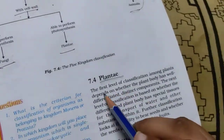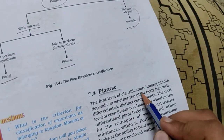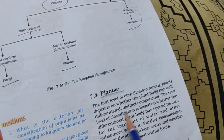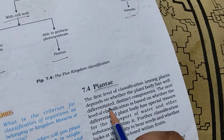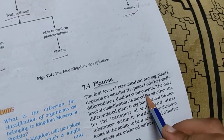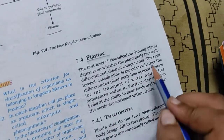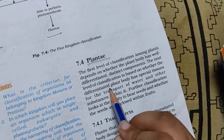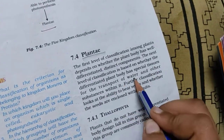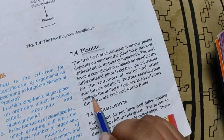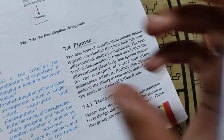The first level of classification among plants depends on whether the plant body has well-differentiated, distinct components. The next level of classification is based on whether the differentiated plant body has special tissue for the transport of water and other substances within it.